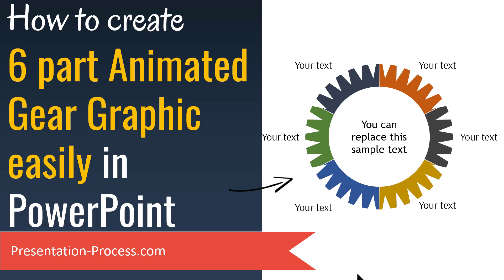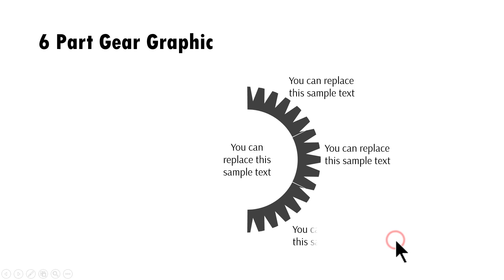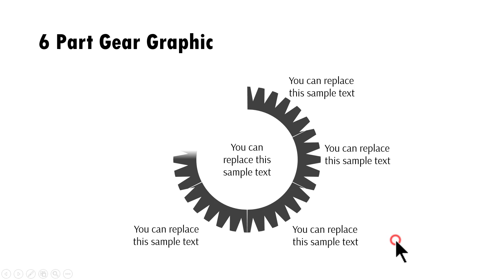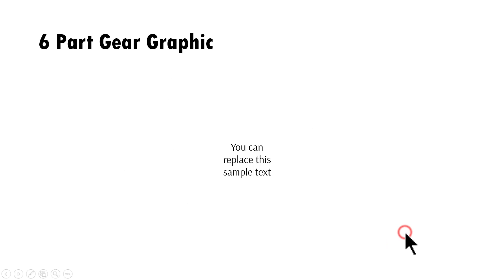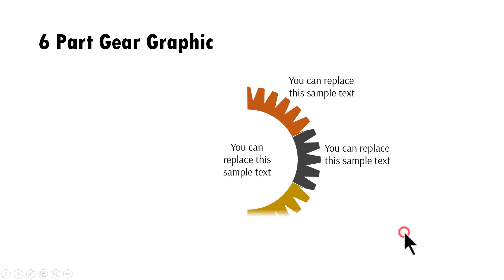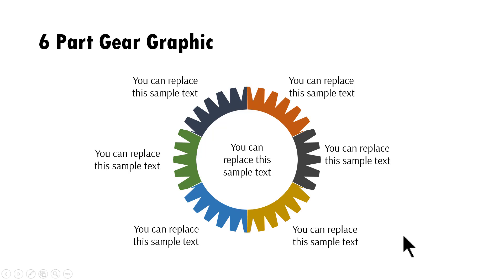In this video, you will learn how to create a 6-part animated gear graphic easily in PowerPoint. The beautiful animated gear graphic you will learn to create today looks like this. On a click, I bring in the first part of the gear, then the second part, the third, fourth, fifth and sixth part. You can always have this in a colored version and choose any color you want. This is very easy to create and I'll show you how to do it from scratch.